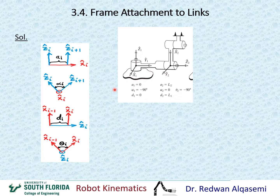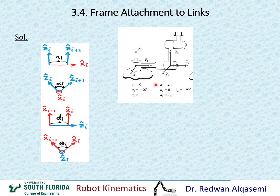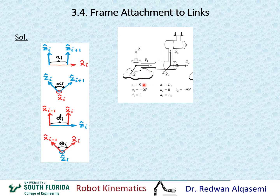For a1, we look at the distance between z1 and z2 along x1. Since z1 and z2 intersect, the distance between them along x1 is zero, so a1 equals zero. For a2, we look at z2 and z3 along x2. The distance between them along x2 is l2, which is the distance from the second joint to the third joint, so a2 equals l2.